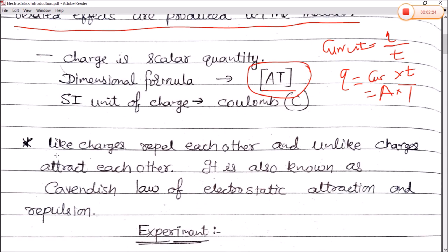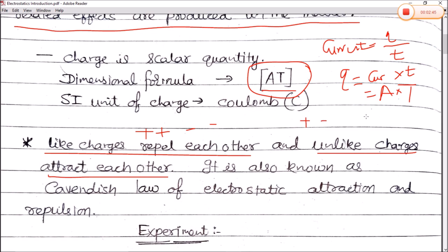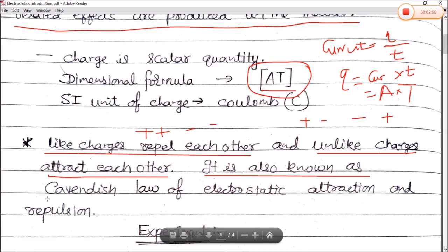As we have studied in lower classes, like charges repel each other — that means a positive charge and a positive charge, or a negative charge and a negative charge, repel each other. And unlike charges attract each other — a combination of positive and negative charge will attract each other. This is also known as Cavendish's law of electrostatic attraction and repulsion.